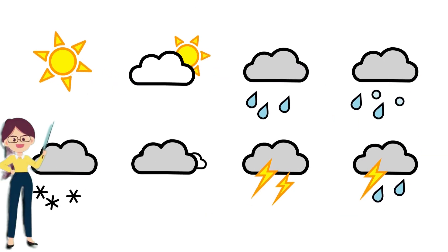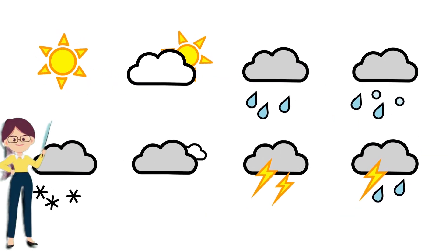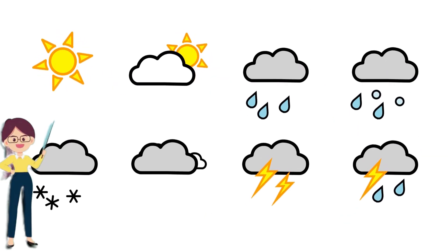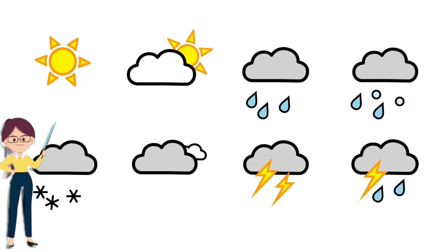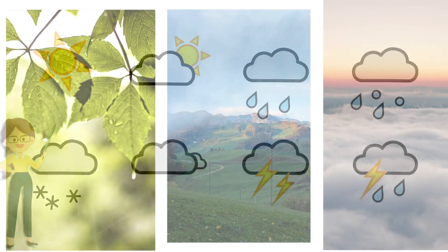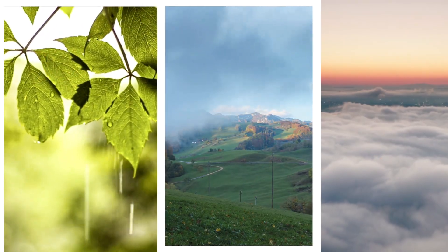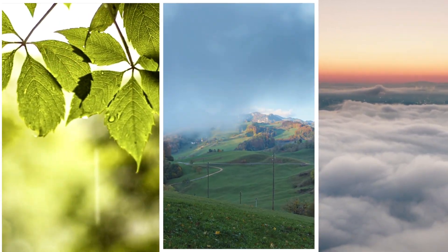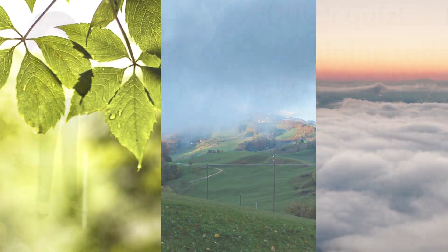So, while weather changes quickly, seasons last for months. Seasons give us patterns of weather we can expect at different times of the year.